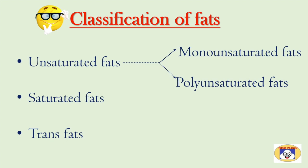Let's learn about the classification of fats. Fats are classified into three main types: unsaturated fats, saturated fats and trans fats. Unsaturated fats are further divided into monounsaturated fats and polyunsaturated fats. In the next part of the video, we will learn about food sources for these different types of fats.